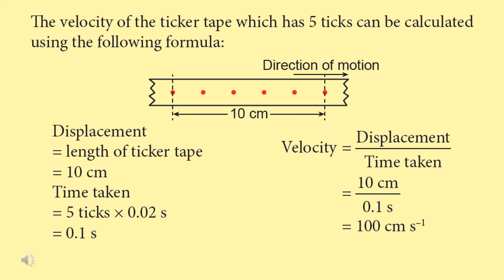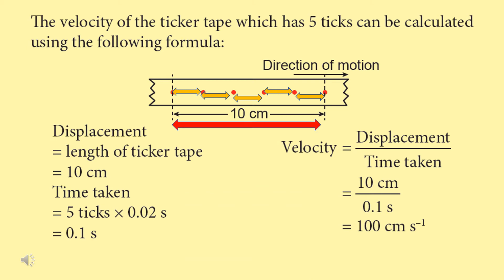The velocity of a ticker tape which has 5 ticks can be calculated using the following formula. Before that, let's count the ticks. This is the first tick, the second tick, the third tick, fourth tick, and the fifth tick. The displacement is 10 cm. The time taken is 5 ticks multiplied by 0.02, which is equal to 0.1 second.